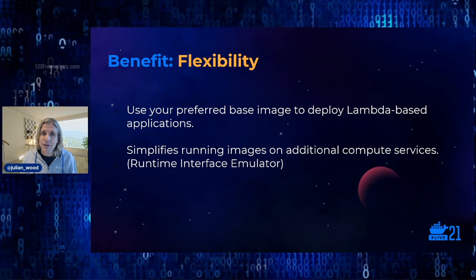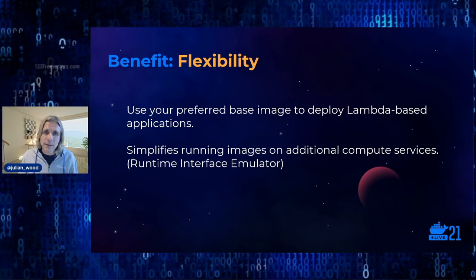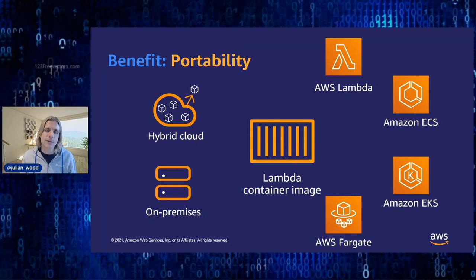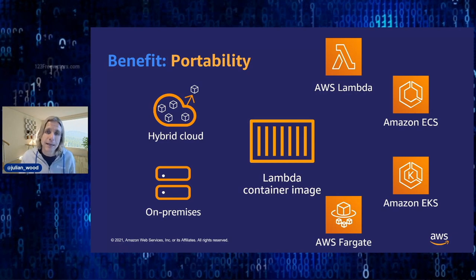You get more flexibility — you can use your preferred Linux-based images, including Alpine, Debian, and Ubuntu, to deploy Lambda-based applications. There's a runtime interface emulator (RIE) that simplifies running images locally and on other compute services. This gives you portability — you can create Lambda functions that also run in other places like Fargate, EC2, on-premises, or in a hybrid cloud. This doesn't replicate the full Lambda environment with all its integrations and scale, but your actual Lambda function code becomes much more portable.